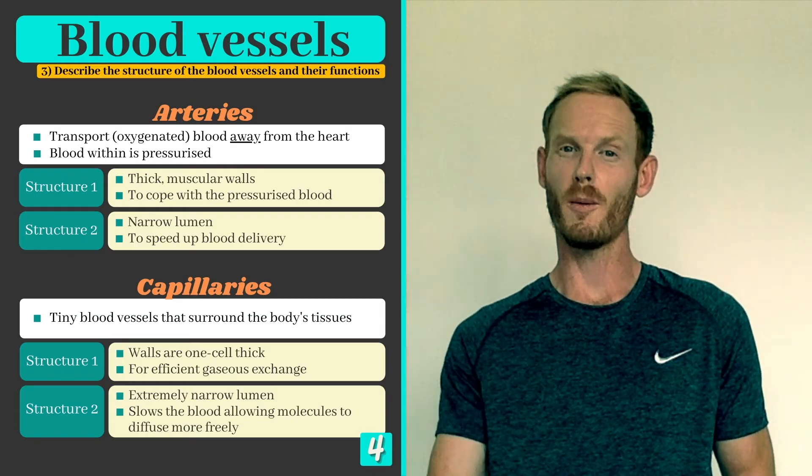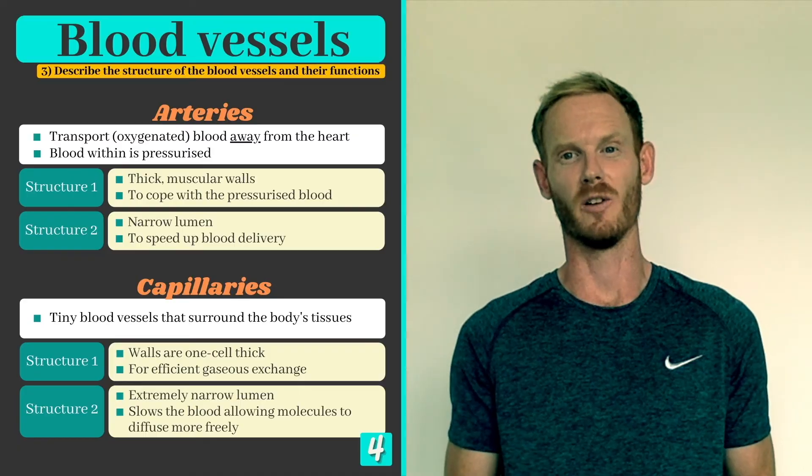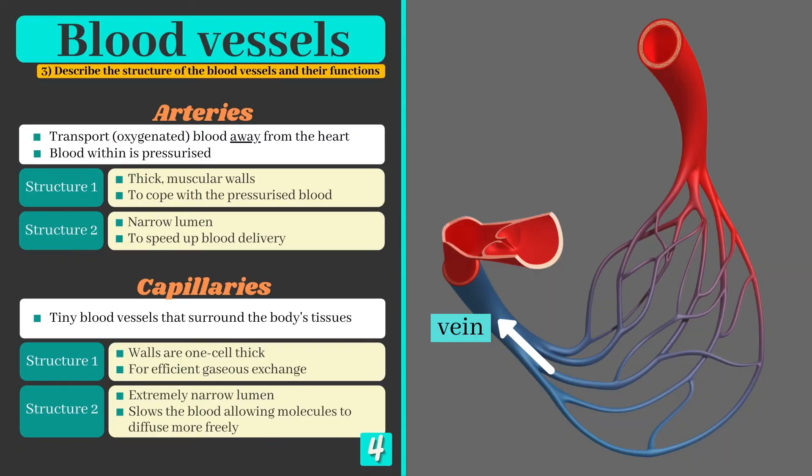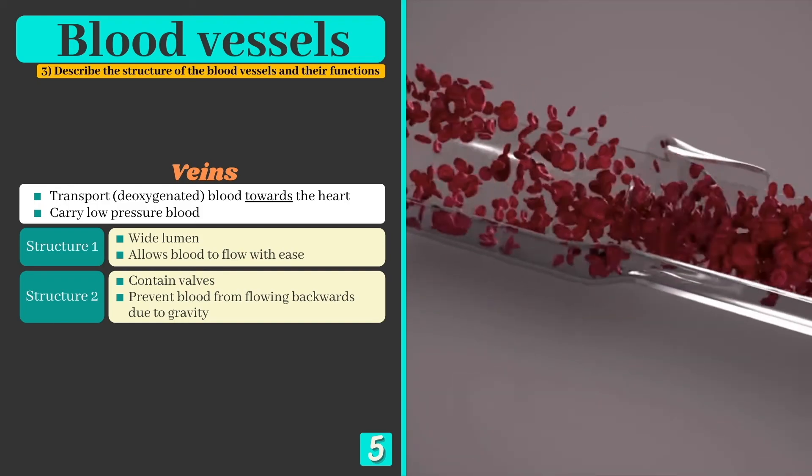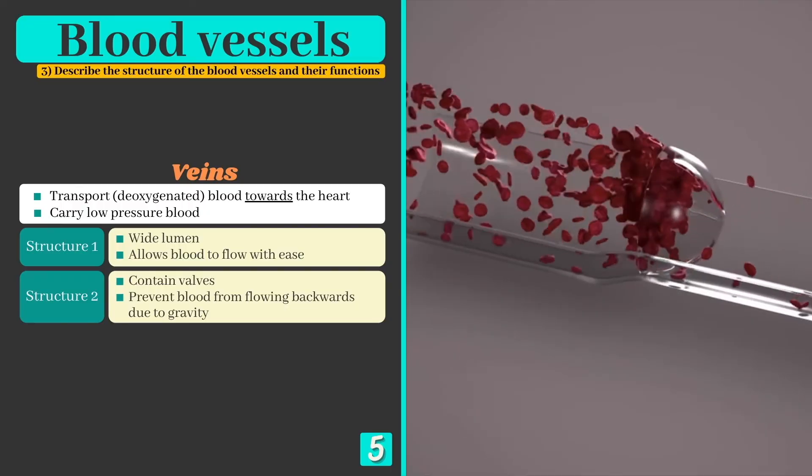Now since oxygen moves from the blood and into the tissues, the blood that flows out of the capillaries has now become deoxygenated. It's also lost much of its pressure at this point and needs some assistance to get back to the heart. Fortunately, the veins are designed to provide just that. They have a much wider lumen than arteries, allowing blood to flow without resistance, and also contain valves which prevent low pressure blood from flowing backwards due to gravity.